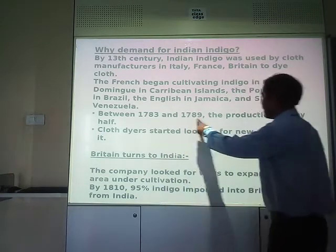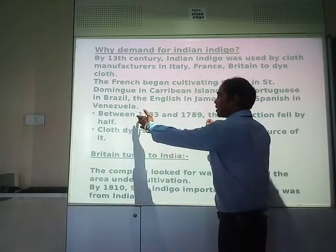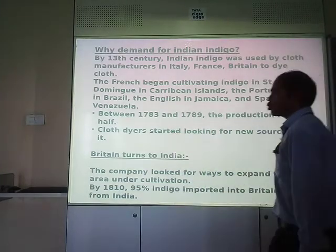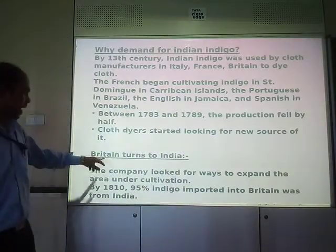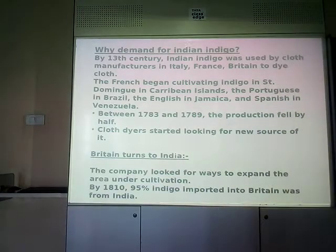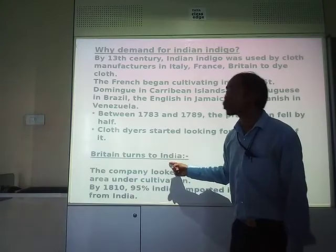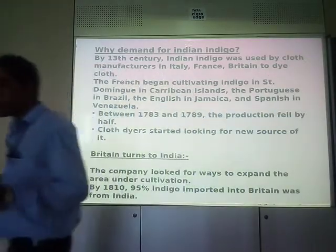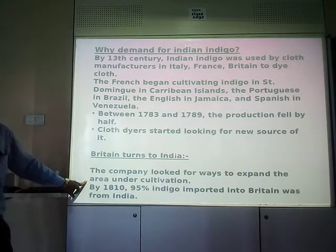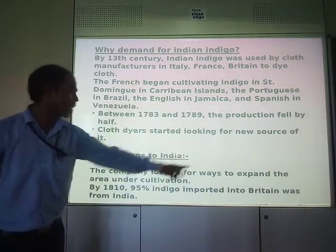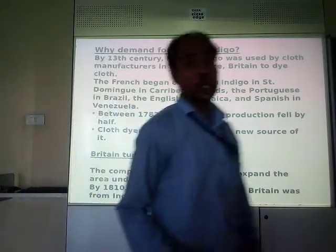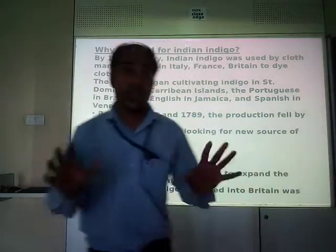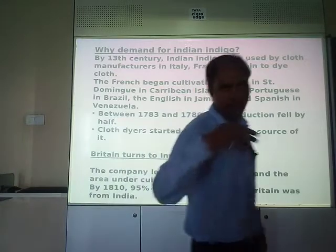Between 1783 and 1789, Indigo production fell by half and collapsed. Cloth dyers started looking for a new source. That's why Britain turned to India — they thought India was the country where Indigo could be grown profitably. The East India Company started expanding the area under cultivation, and by 1810, 95% of the Indigo imported into Britain came from India.